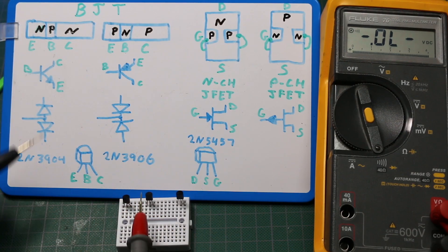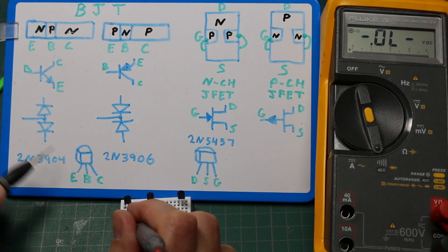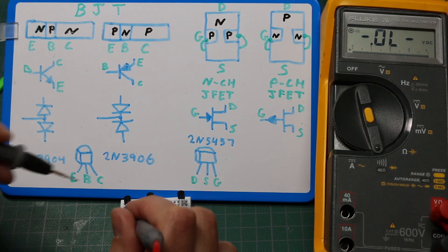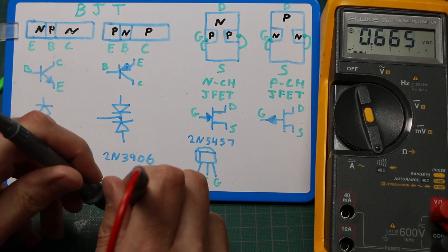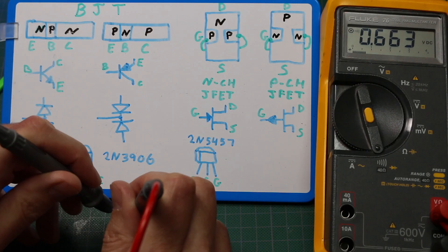And I see 0.663 volts. So there's a silicon diode drop.